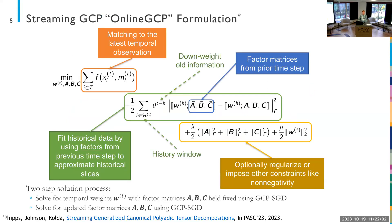At each time step we solve an optimization problem. The first term is your standard GCP objective for your choice of loss function, where you're finding factor matrices A, B, C and time-varying weights W_T given the time slice X_T that you've observed. But A, B, and C are supposed to represent all tensor data observed over all time, so the second term is a regularization term that prevents A, B, and C from changing too much from step to step. This uses a history window of past time points, with an exponential down-weighting factor theta to down-weight older data.